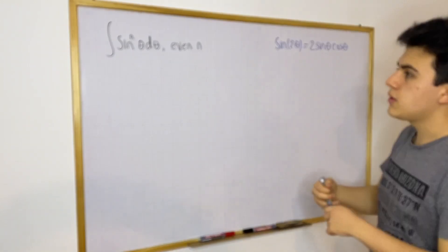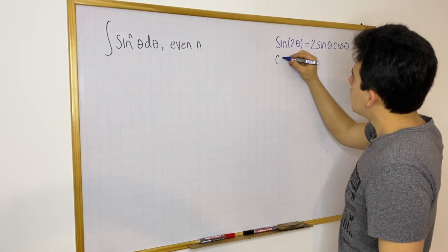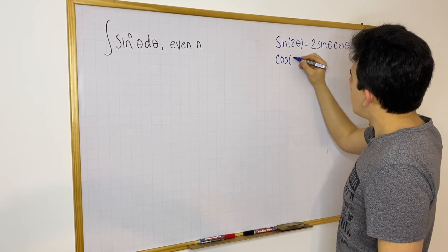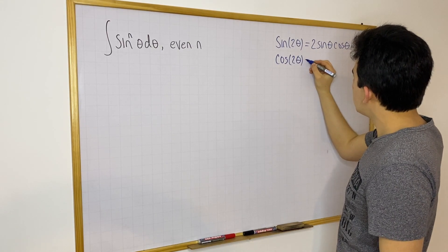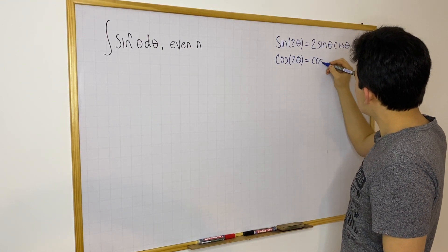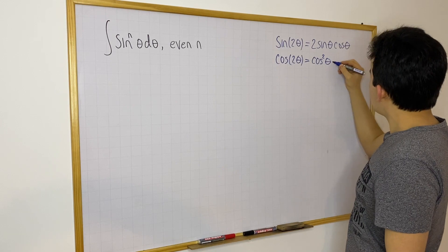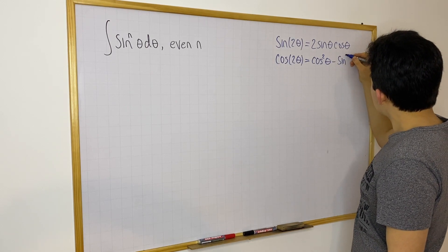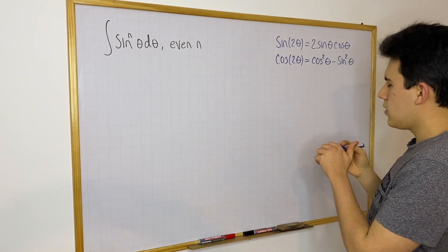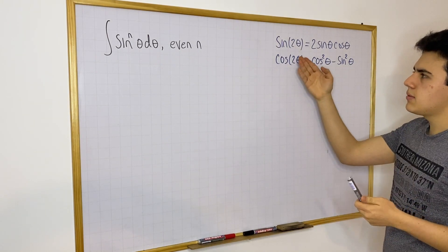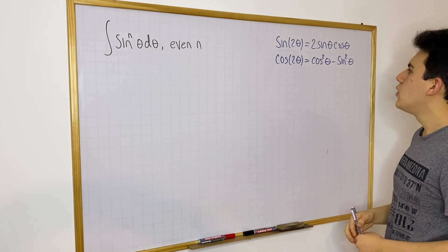There's another one which is really important: cosine of 2θ equals cosine squared θ minus sine squared θ. This is also called the double angle formula. If you divide this, you get the half angle formula — it's the same equation just rewritten in different ways.